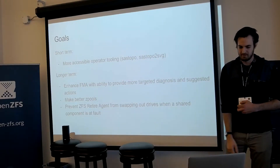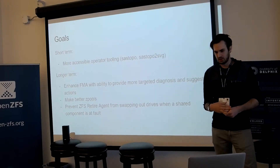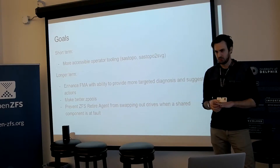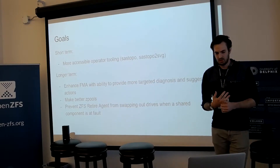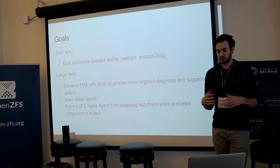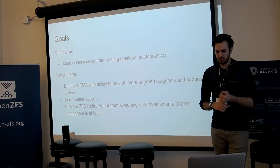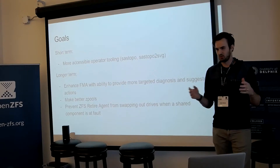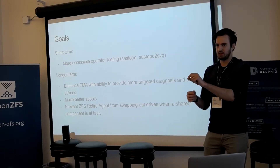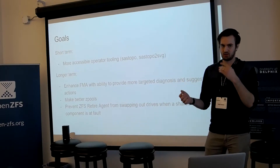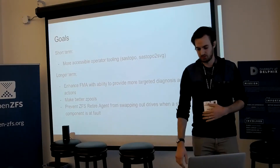Our short-term goals are just to have better tooling for operators. Longer term, since Illumos has FMA — really good fault management for hardware — we would like to enhance FMA to provide more targeted diagnoses when things start going wrong in the chassis. Maybe ZFS stops automatically swapping in disks all the time when it sees checksum errors. We also want to be able to make better pools — when I make a pool, I just go like 'zpool create mirror raidz1 sda stb stc std' without really taking into account where the disks actually are and what the fault domains are. That's really what we'd like to do with this work.